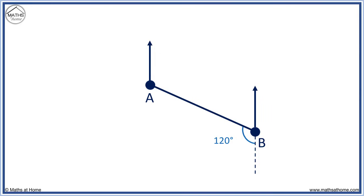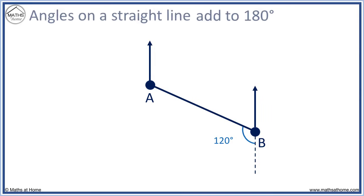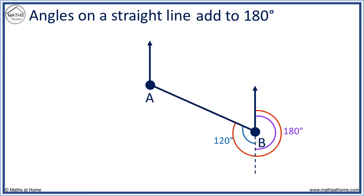We will now find the bearing of A from B using the fact that angles on a straight line add to 180 degrees. Here is a straight line which is 180 degrees. The bearing is 180 plus 120 degrees, which equals 300 degrees.